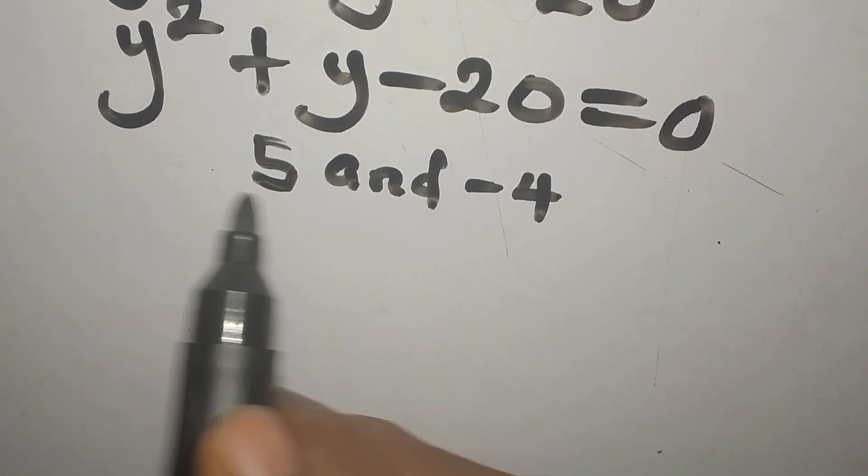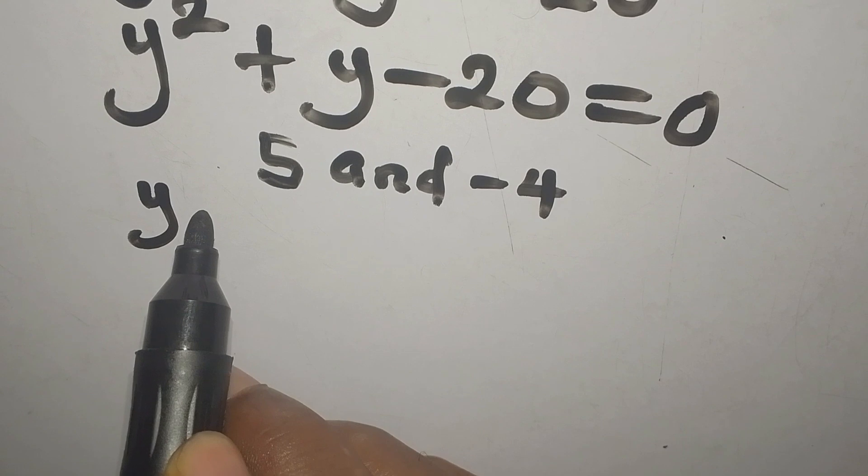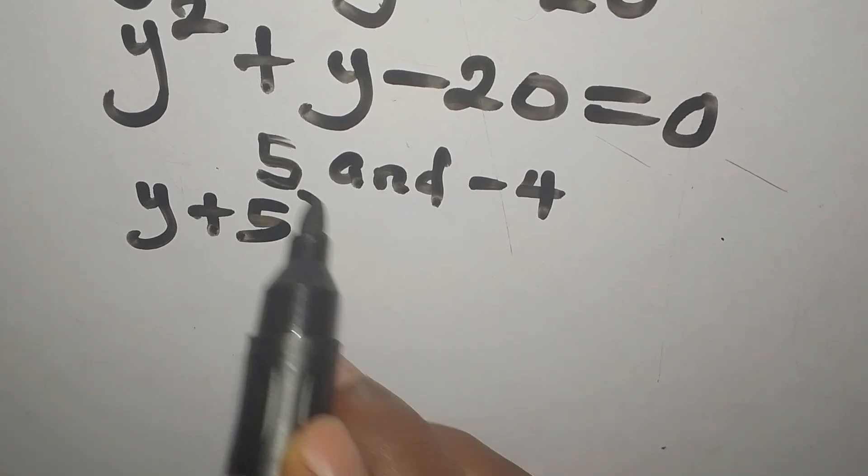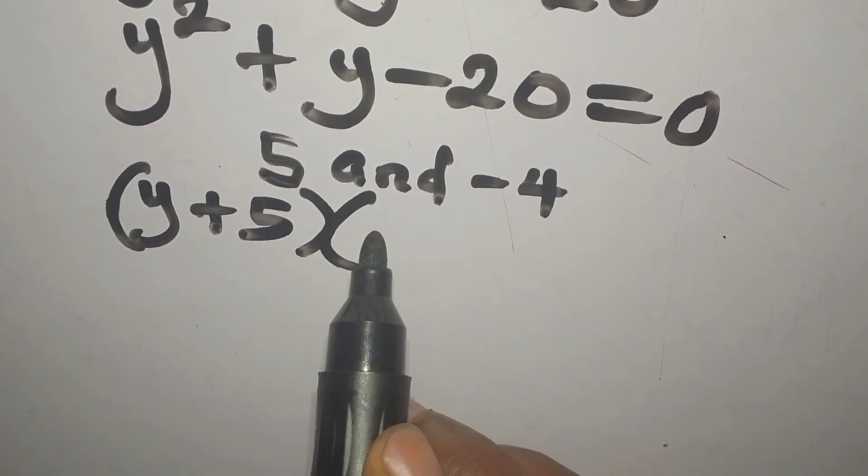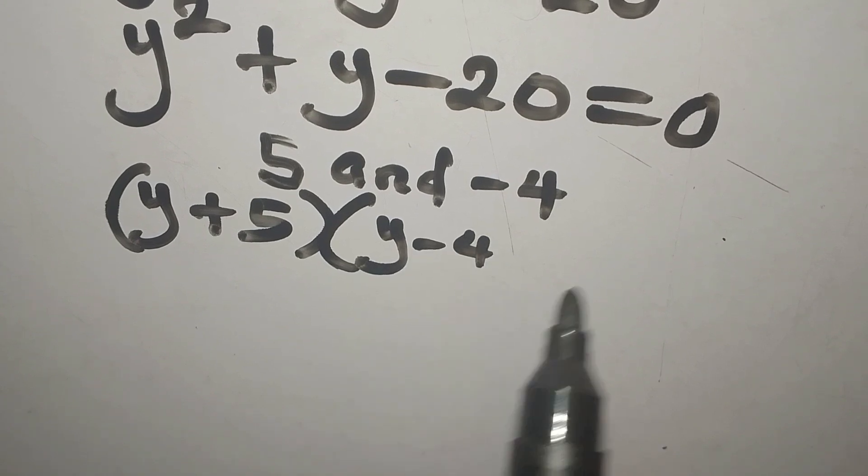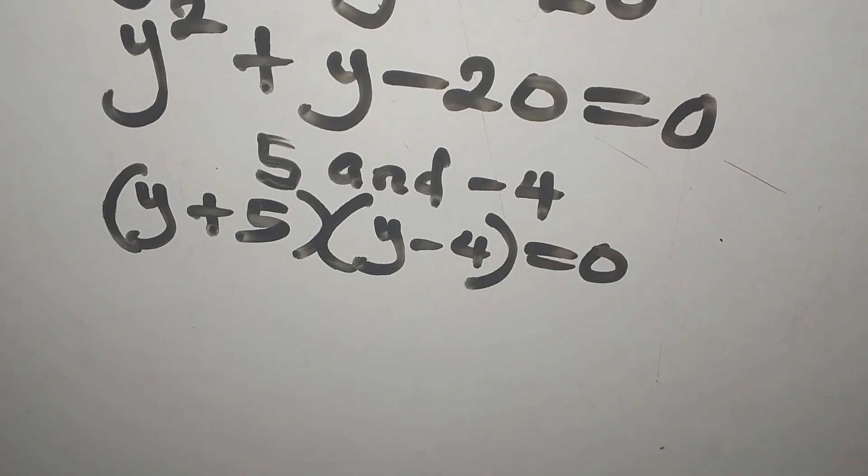So now the factors are y plus 5. That is one of the factors. And then the second factor is y minus 4. Then everything is equal to 0.